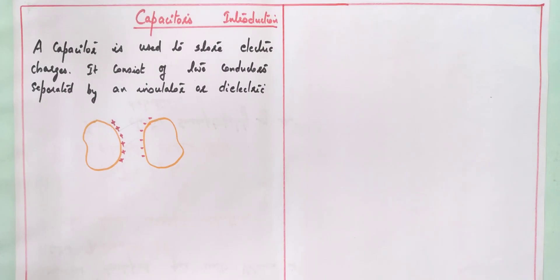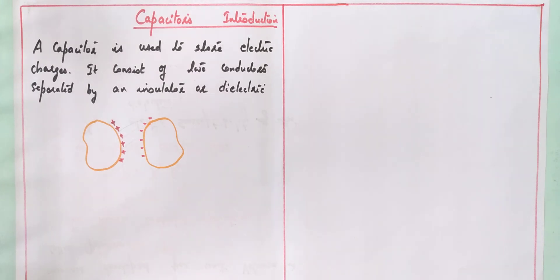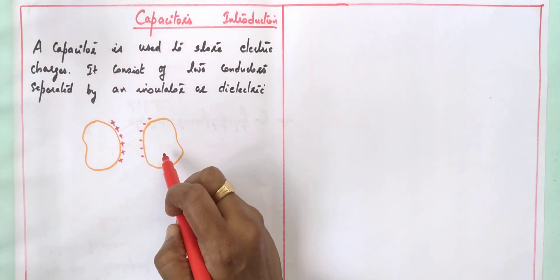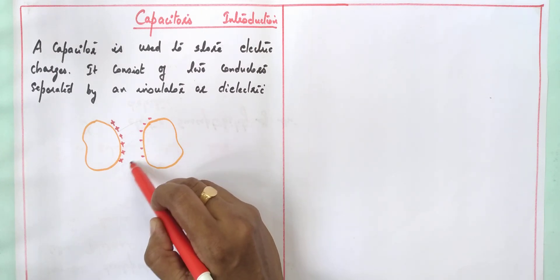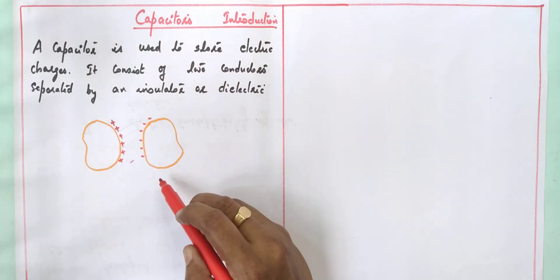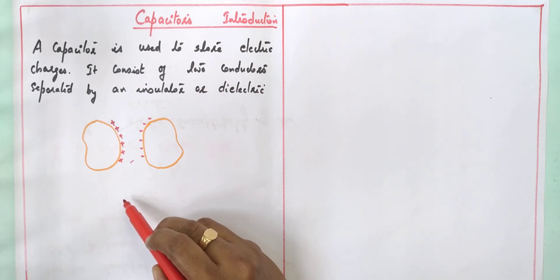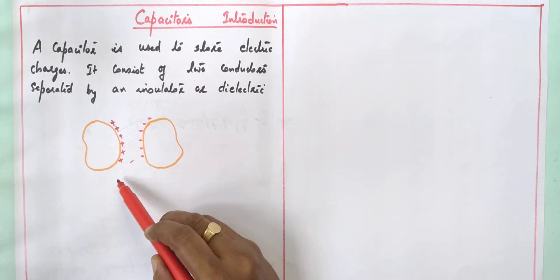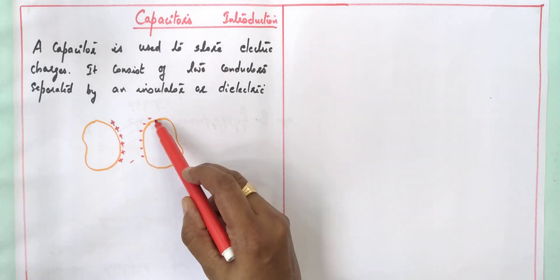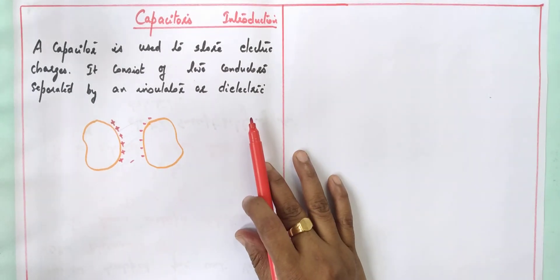Today we are going to deal with capacitors. A capacitor is an electrical device used to store electric charges. You might have seen capacitors in almost all electrical circuits. It mainly consists of two conductors separated by an insulator. When the conductors are connected to a battery, the conductor connected to the positive terminal becomes the positive charge plate and the other becomes the negative charge plate.